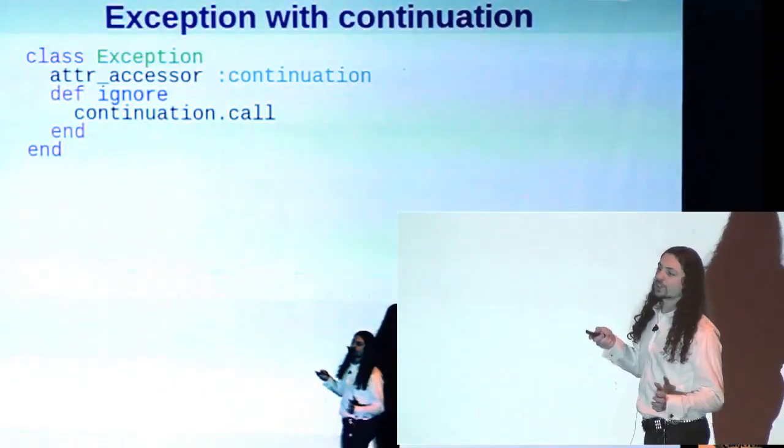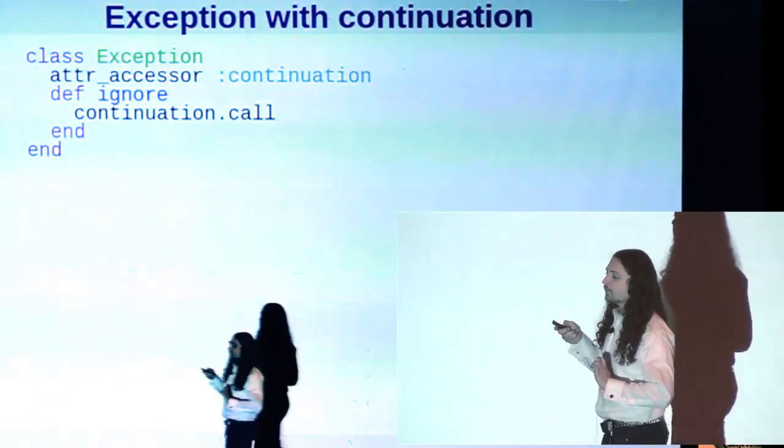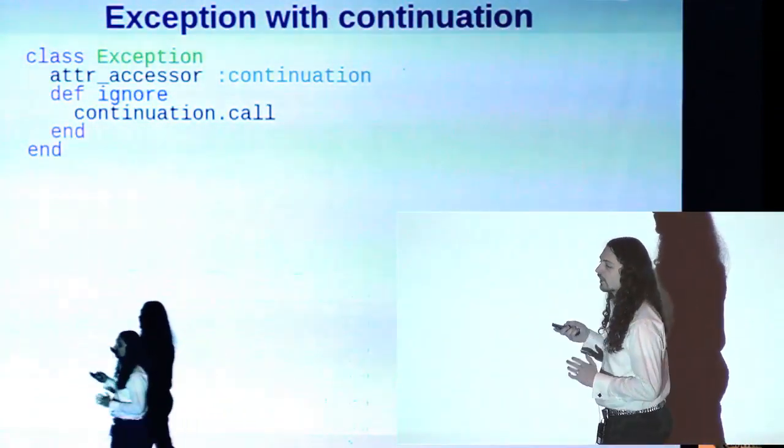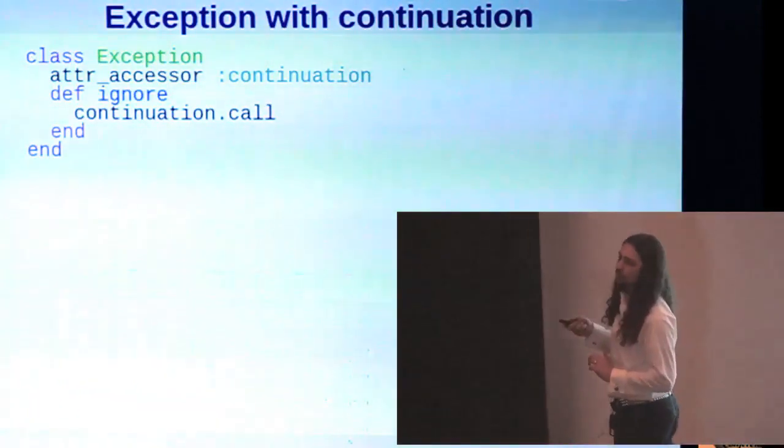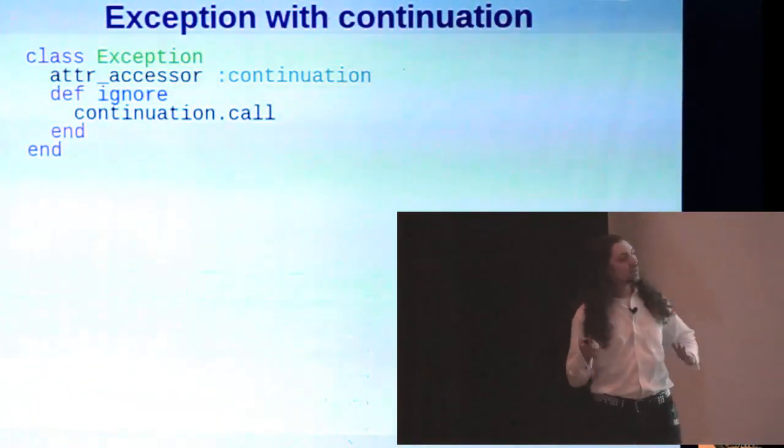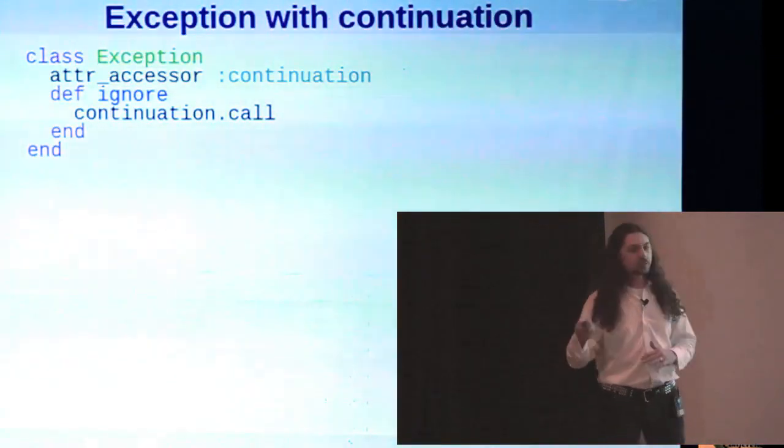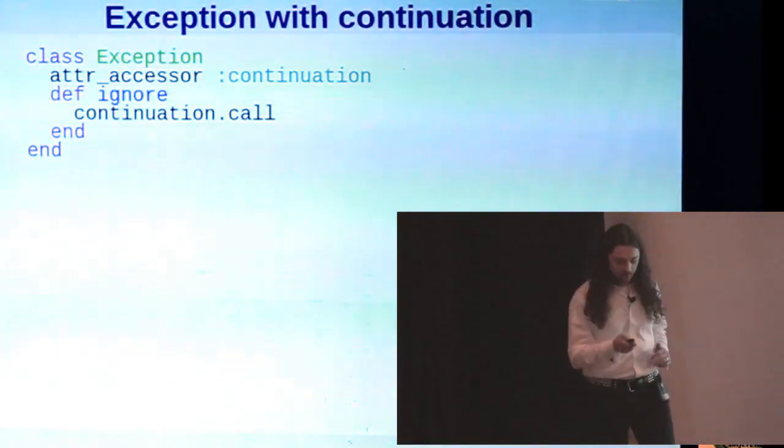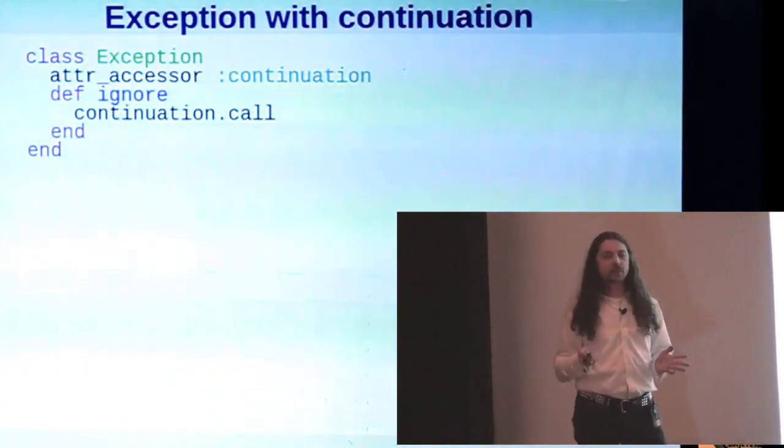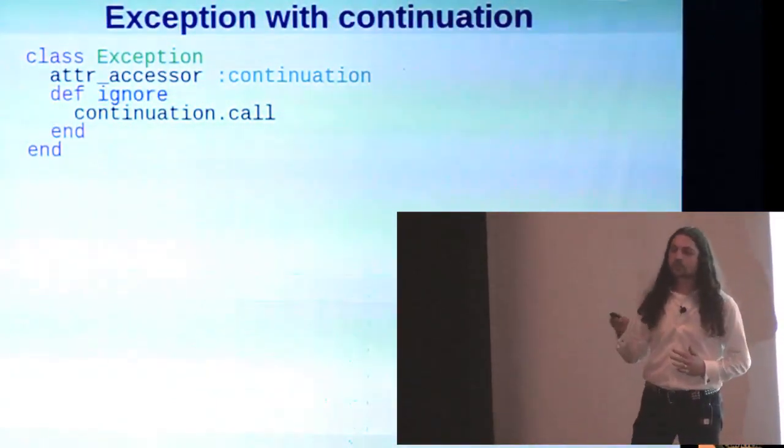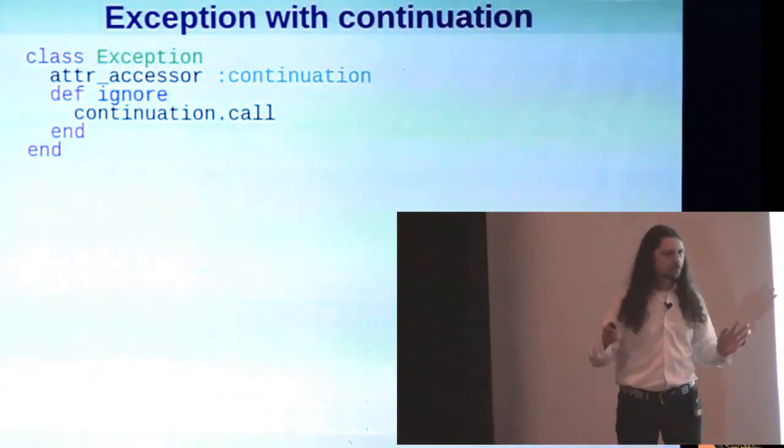So we'll start with a modification to the exception class, the base exception class, and we're just going to add an attribute to it which will hold a continuation. And we'll get into what a continuation is in a minute. And then we're going to define this ignore method which will simply call the continuation. So keep that in your mind.